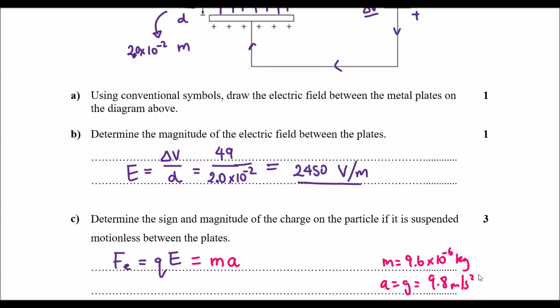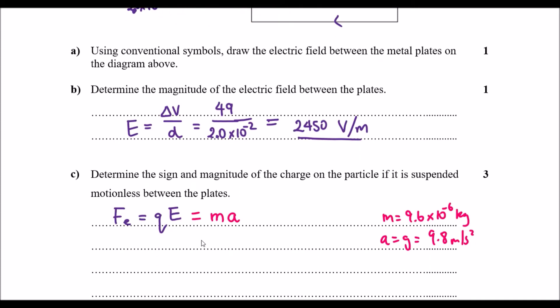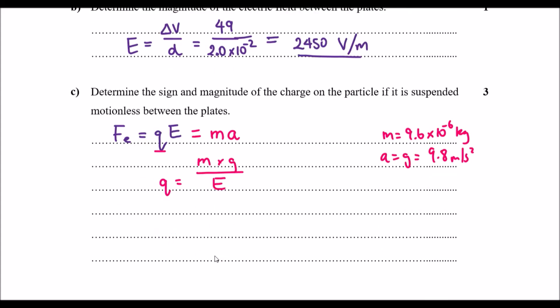So let's just make sure I cross-reference. Yep, that is correct. Okay, so the subject of the equation is to find the value of Q. So if I rearrange M multiplied by G over E is the equation.